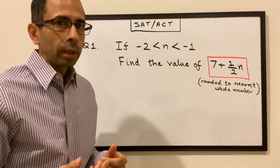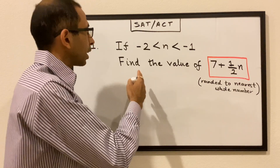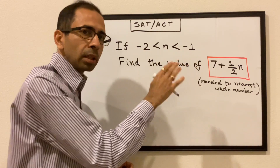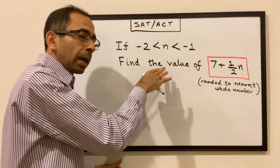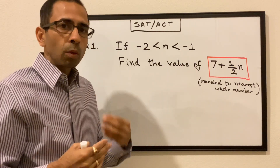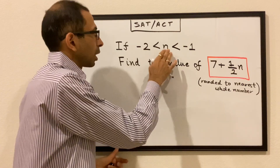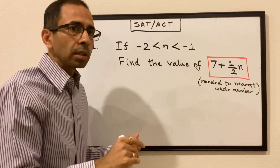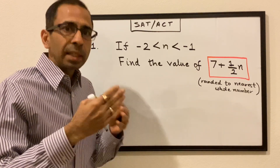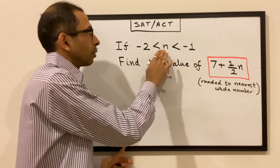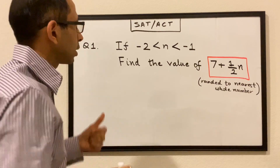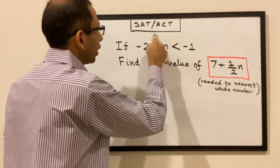We can add the same number on each side of the inequalities, subtract the same number on each side, and we can also multiply or divide by the same number on each side. The only thing to keep in mind is that if we divide or multiply by a negative number, the sign of the inequality flips.